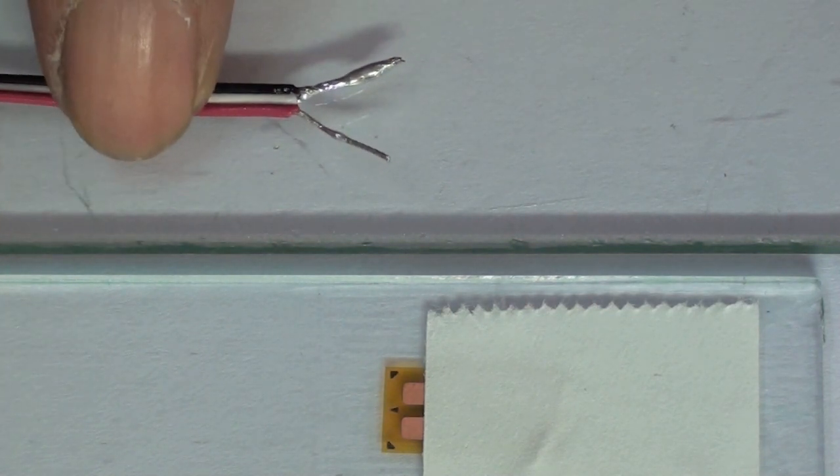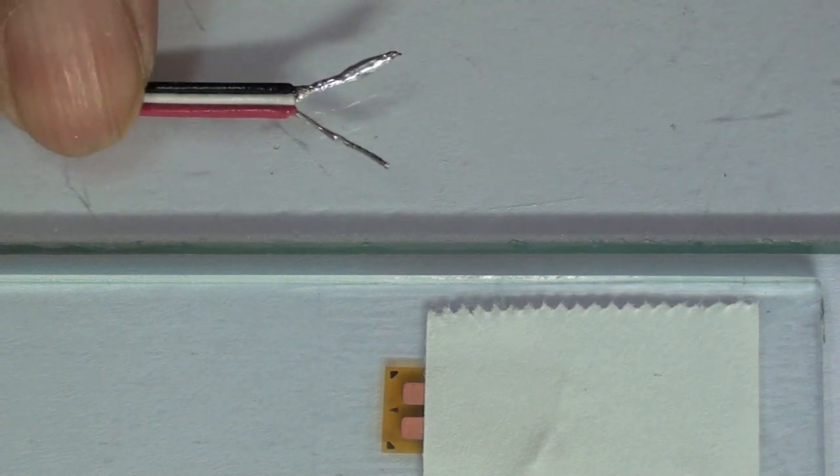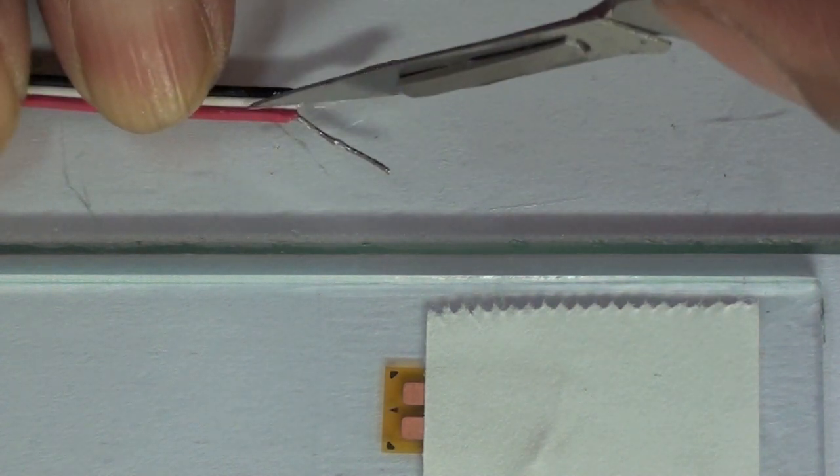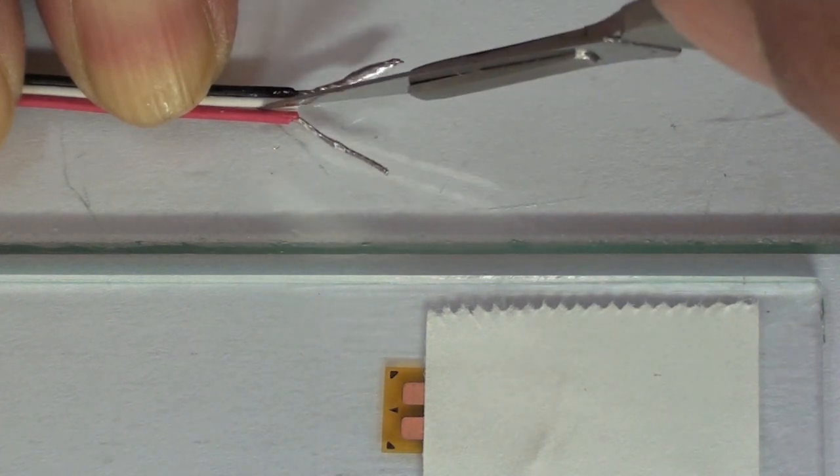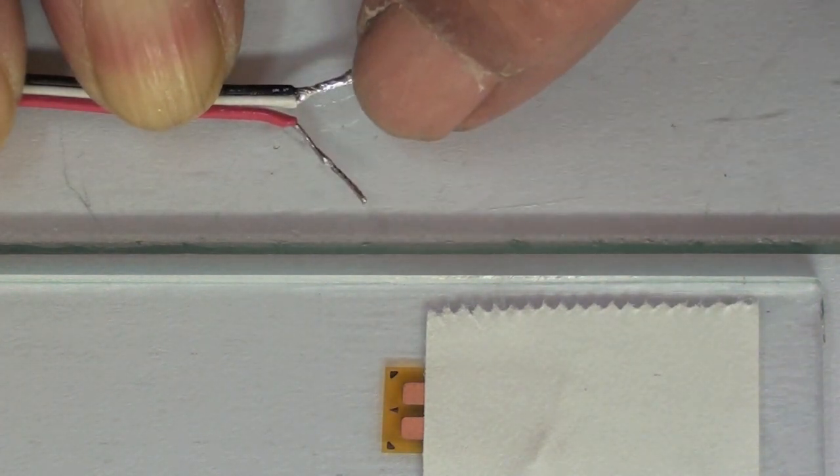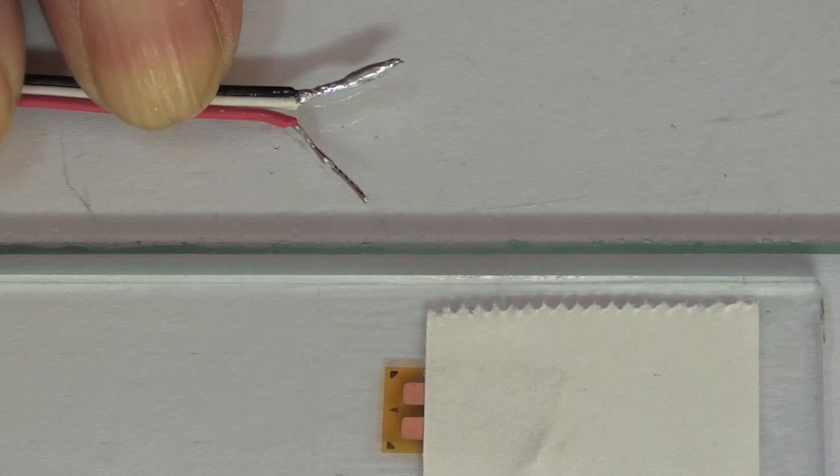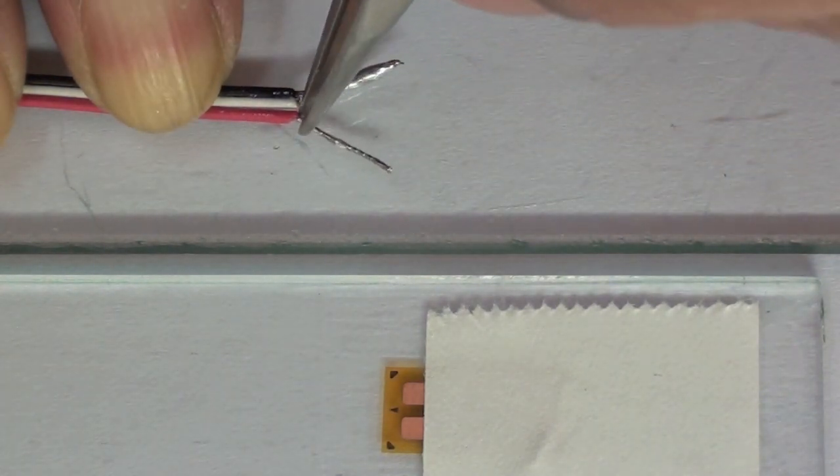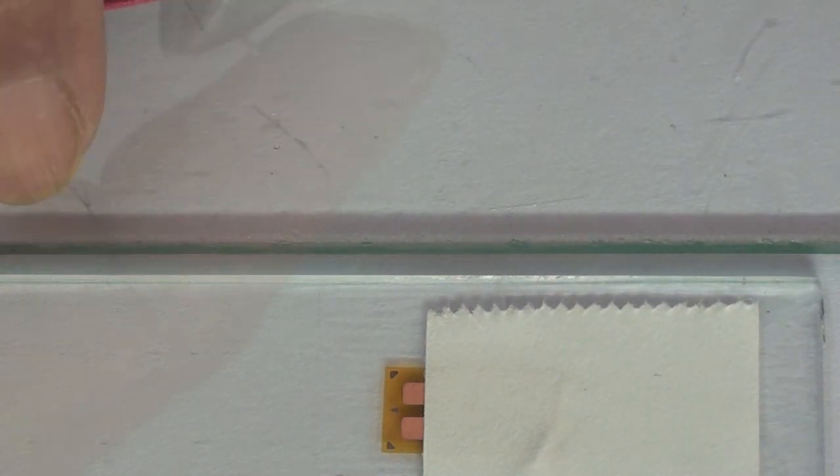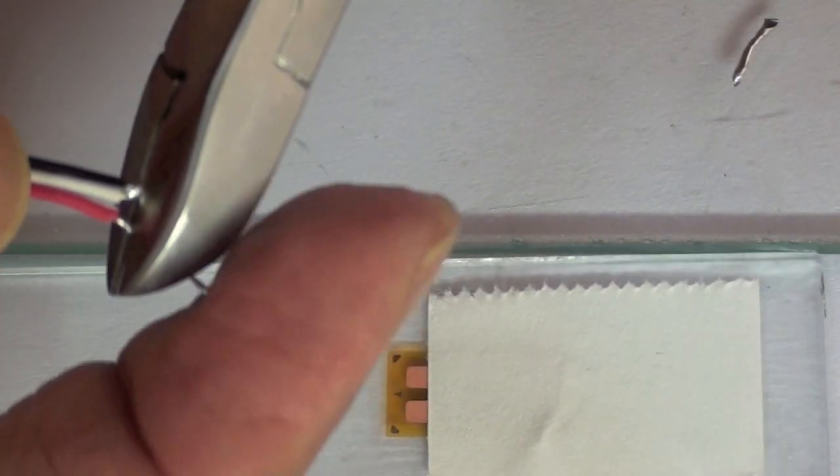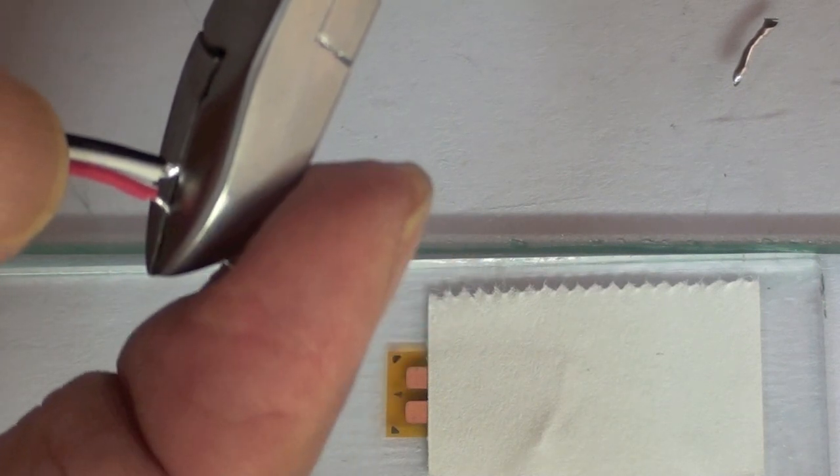To have some flexibility between the conductors, they are separated at the insulation with a sharp knife. The conductors are then trimmed with a pair of diagonal cutters to have just over a millimeter of exposed wire beyond the insulation.